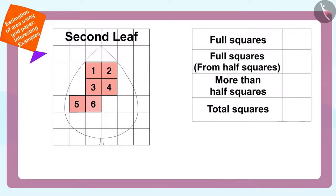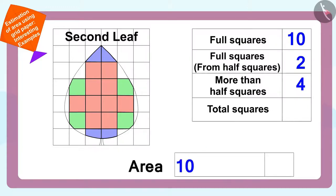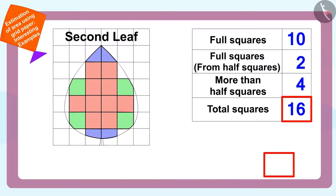The area of the second leaf has ten full squares, four half or two full squares and four more than half squares. And there are some less than half squares which we will not count. In this way, there are ten add two plus four or sixteen squares in the enclosed area of the second leaf. In other words, there are sixteen squares in the area of the second leaf.